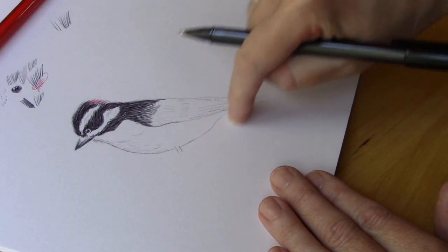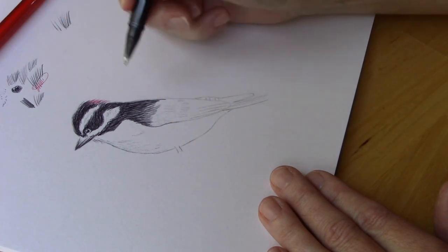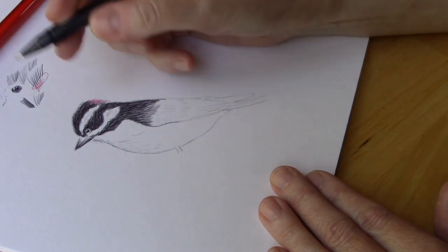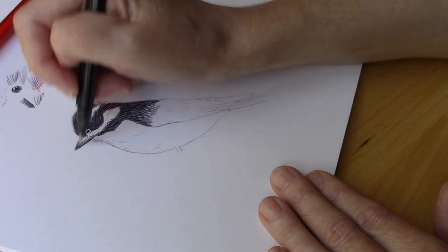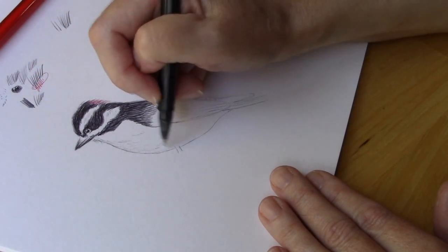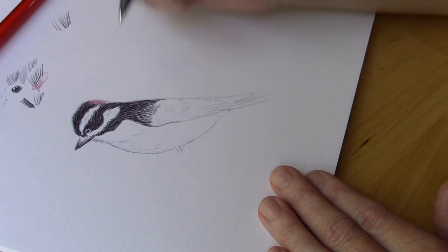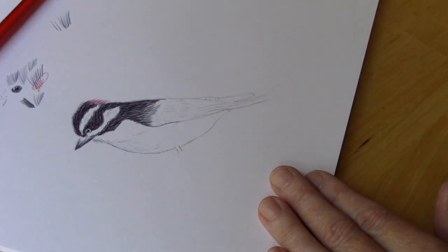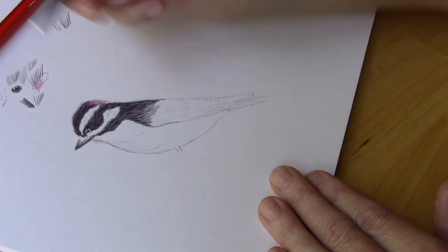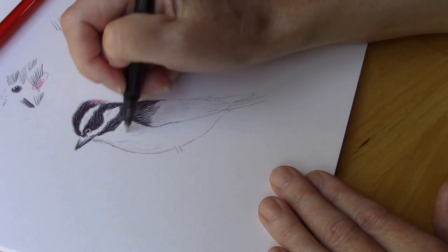I've left the lines on my initial underdrawing that I did in pencil a little bit darker than I normally would and that's so that you can kind of follow along with me. When I'm done with this I will take a kneaded eraser and I'll go over my lines to lighten them even more because I don't want my pencil lines stuck underneath.